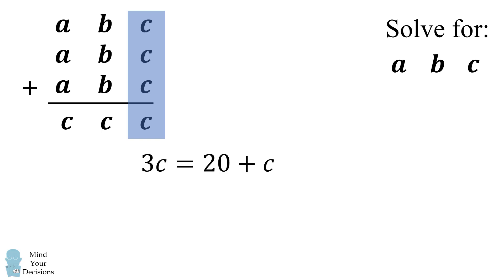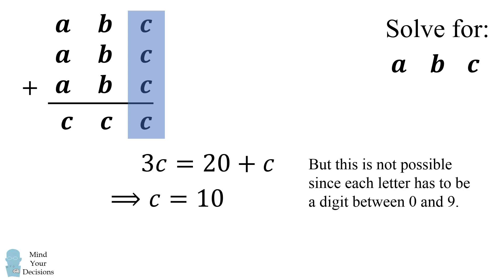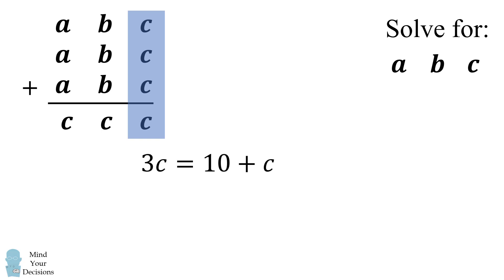Let's consider the third case that 3c is equal to 20 plus c. In that case we can solve c is equal to 10. But this is not possible since each letter has to be a digit between 0 and 9.